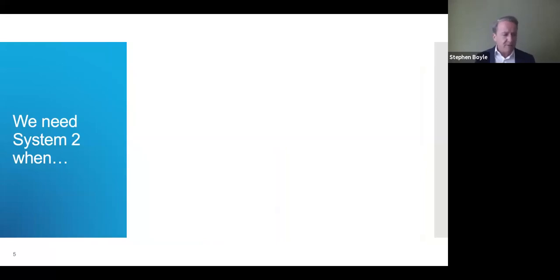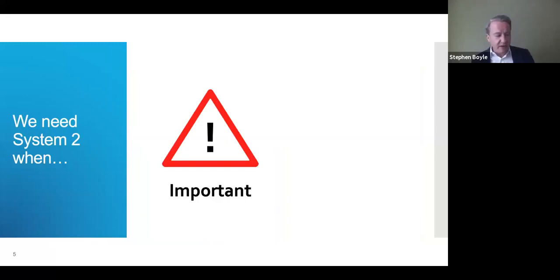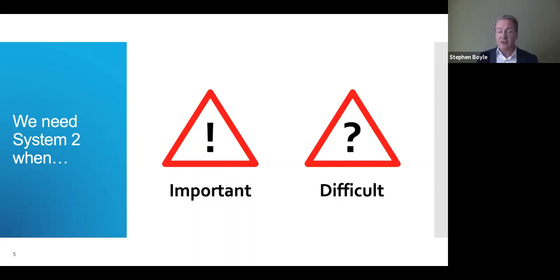Well, for starters, System Two should always be used if a decision is important. And what's important? Important in the sense that the achievement or non-achievement of the objectives really, really matters a lot to you. And it should usually be used if the decision is difficult. Now, not all difficult decisions are important.